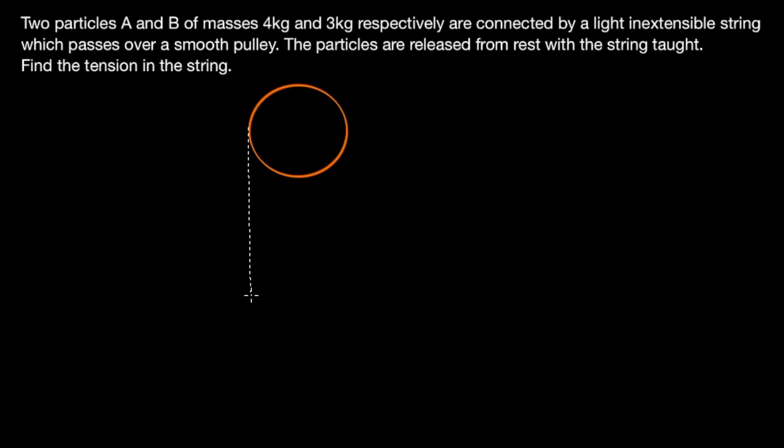So here's my attempt at drawing a pulley. The word respectively tells us that particle A has a mass of four kg and particle B has a mass of three kg, so let's put that on the diagram.